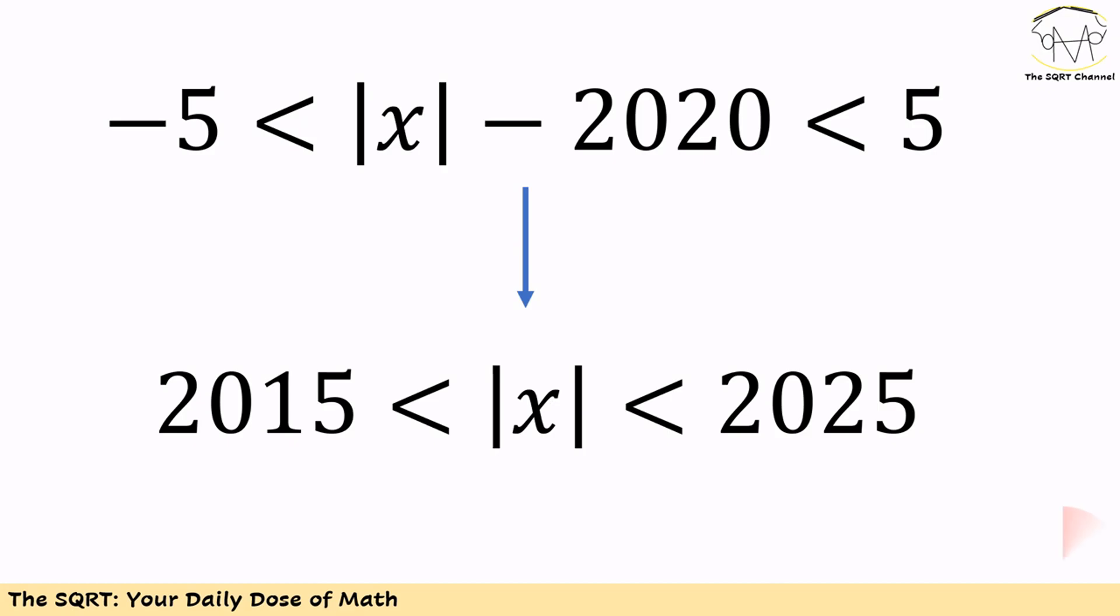To simplify it further, we can reorder the equation to receive |x| is between 2015 and 2025.